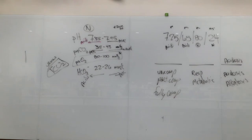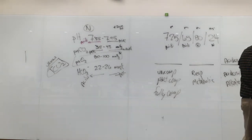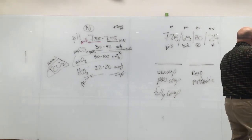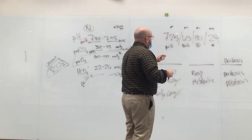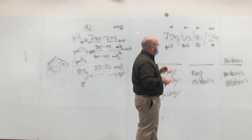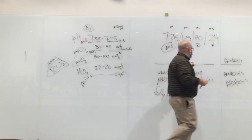Disease processes affecting acid excretion include kidney disease and renal failure — the bicarb drops because hydrogen isn't being eliminated. Anything to do with the bicarb side is metabolic. In this example, CO2 is acidotic and pH is acidotic — they match — so this is respiratory.